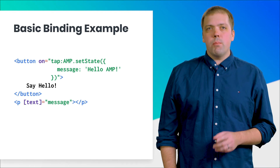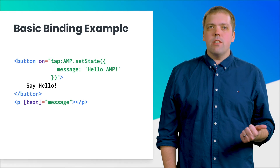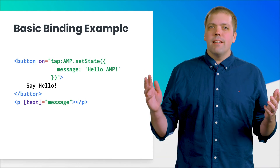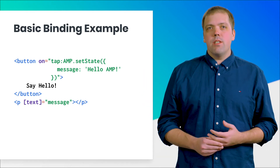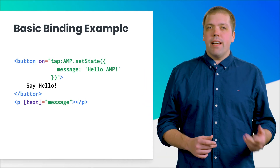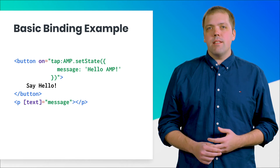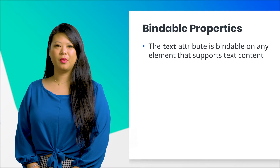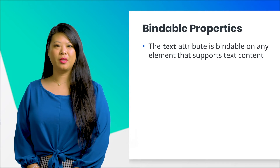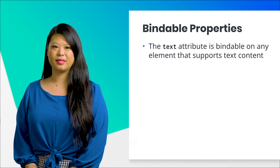When the button on screen is pressed, the state variable message is set to "hello, AMP." Next, the binding expressions on the page are re-evaluated. And finally, the paragraph tag updates to say "hello, AMP."